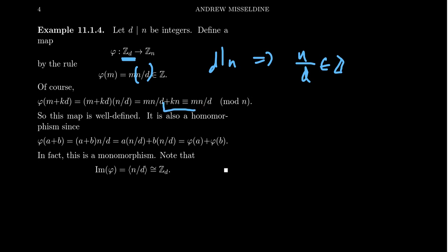Which is where the codomain lives. And so therefore, these two elements are congruent to each other. And so this would just equal phi of m. So if two numbers are congruent mod d, then their images will be congruent mod n. So this is, in fact, a well-defined map.